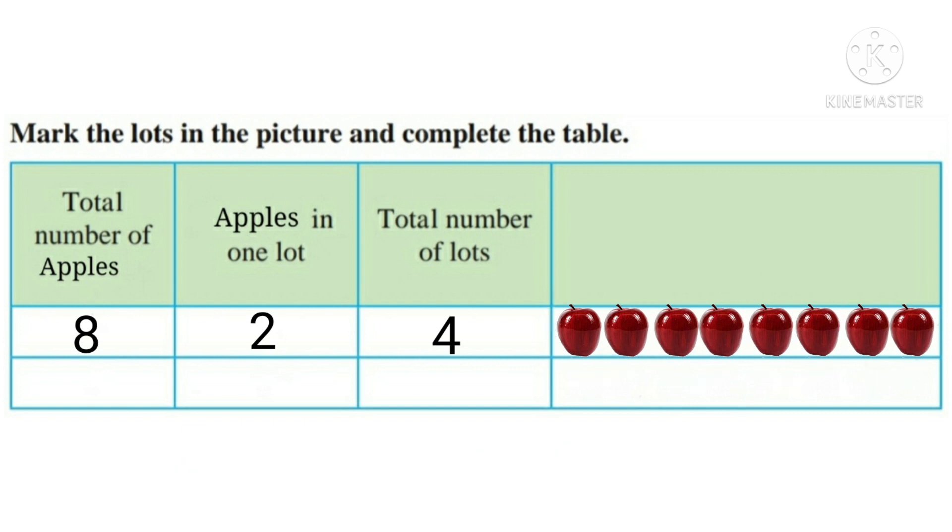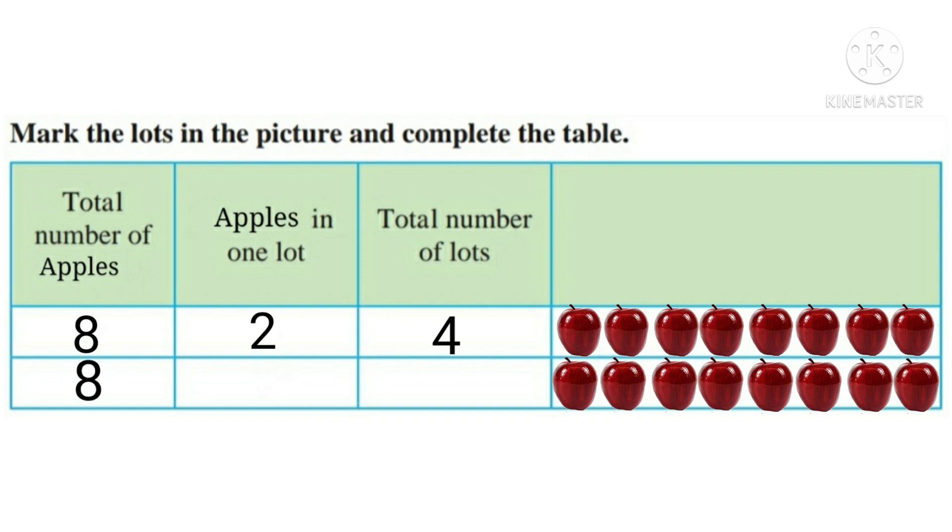Now again, we will take 8 apples. This time we will make a lot of 4 apples. Now in each lot there should be 4 apples. So this is first lot and this is second lot.